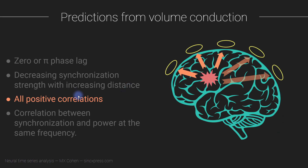Another thing you can expect is all positive correlations. For the same reason you have zero or pi phase lag synchronization, if the synchronization between two electrodes actually reflects the same source, of course those electrodes would be positively correlated — they're not going to have a negative synchronization value if they are measuring the same thing. It gets a little tricky because if you're on two different sides of the dipole, ions flow into neurons on one side and out on the other, so the time-domain correlation is strong but negative. However, in the frequency domain and time-frequency domain you will never see negative correlations for volume-conducted signals.